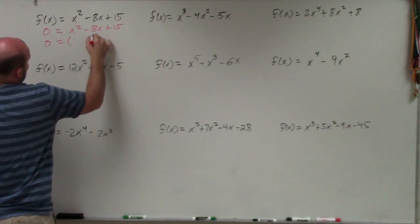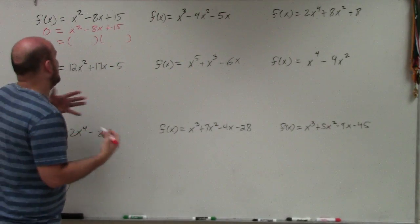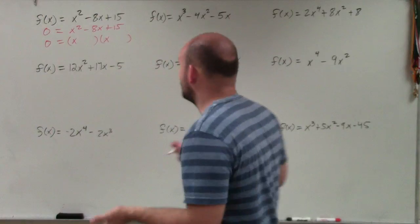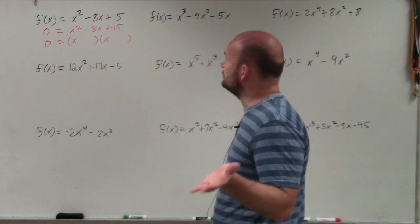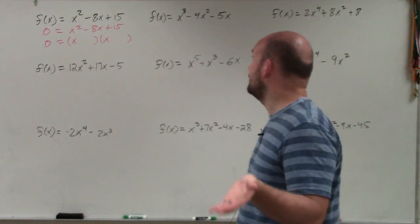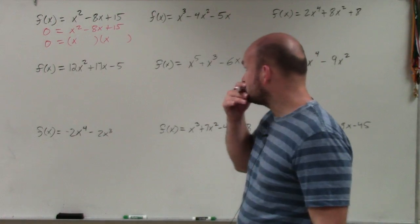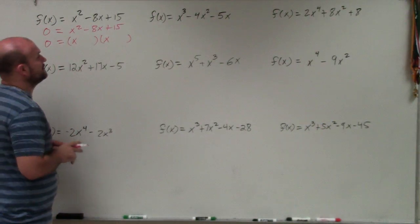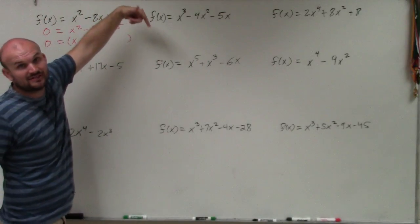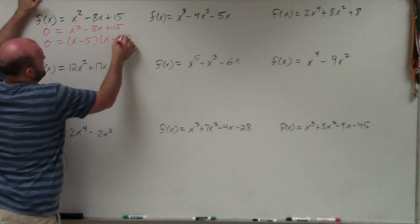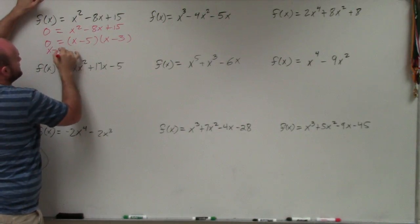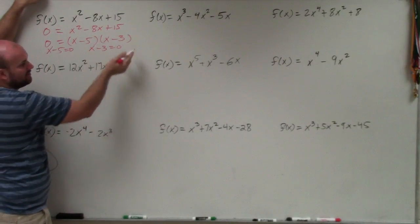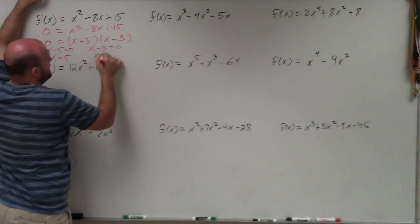Rather than going through all the techniques, basically what I need to do is determine what two numbers multiply to give you 15, but add to give you negative 8. Since they're adding to give you a negative, both factors have to be negative. What's going to work is x minus 5 and x minus 3. Therefore, I write x minus 5 equals 0 and x minus 3 equals 0 — applying the zero product property — so x equals 5 and x equals 3.